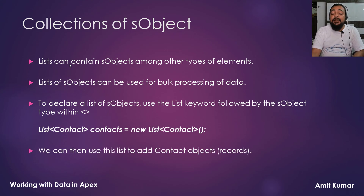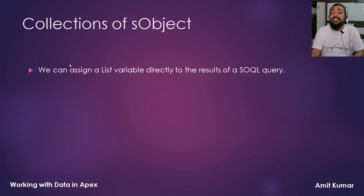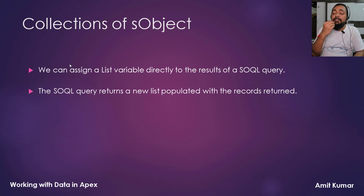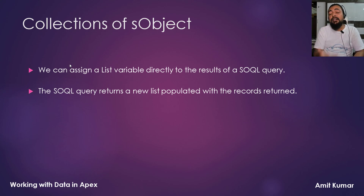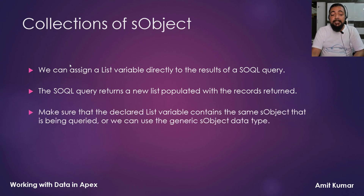Once a list of contacts is created, we can use this list to add contact objects, which are nothing but contact records. We can also assign a list variable directly to the result of a SOQL query, which we will discuss later in coming videos. The SOQL query returns a new list populated with the records being returned. Make sure that the declared list variable contains the same SObject that is being queried, or we can use a generic SObject data type.